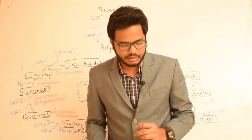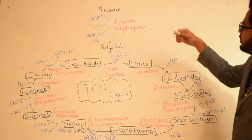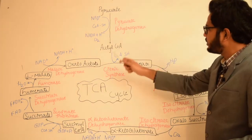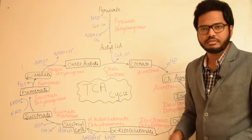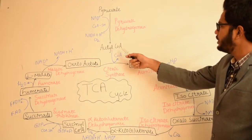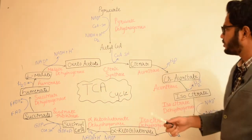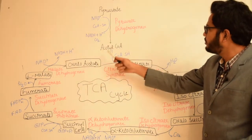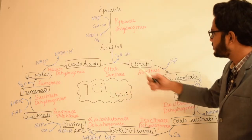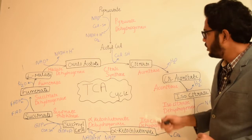The citric acid cycle starts with the condensation of acetyl-CoA and oxaloacetate. Acetyl-CoA is a two-carbon molecule, whereas oxaloacetate is a four-carbon molecule. They combine to form citrate in the presence of the enzyme citrate synthase, and coenzyme A is released in this process.